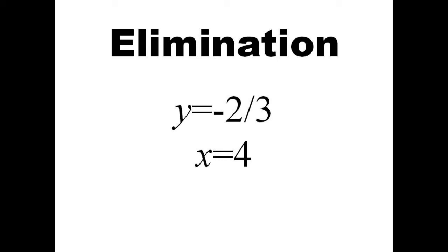Oftentimes, this solution is considered to be the intersection of two lines. In this case, the point of intersection is 4, negative 2 thirds.